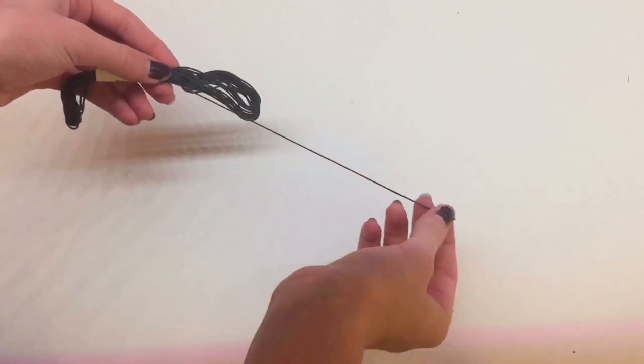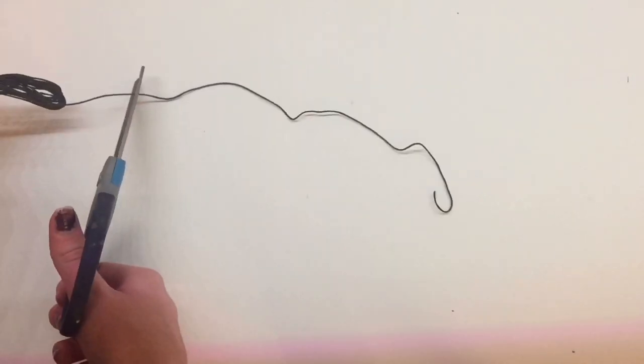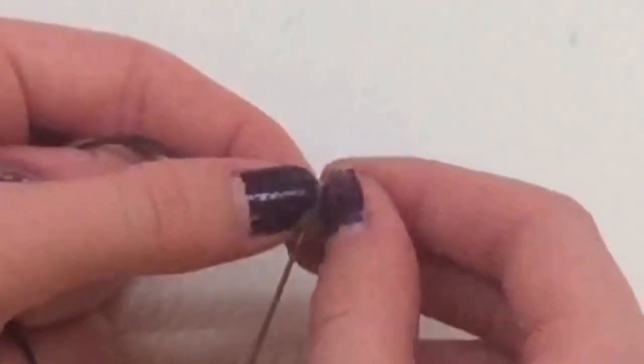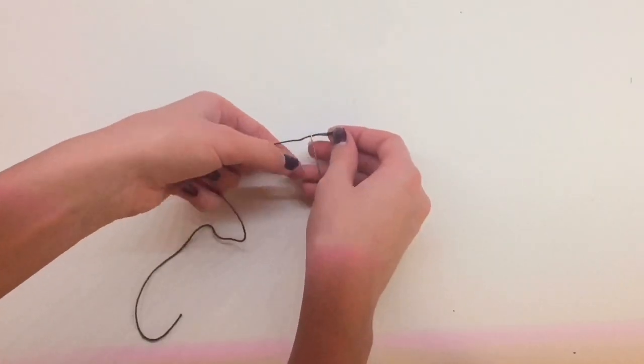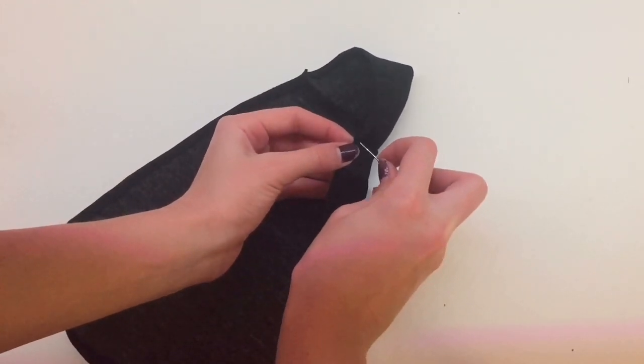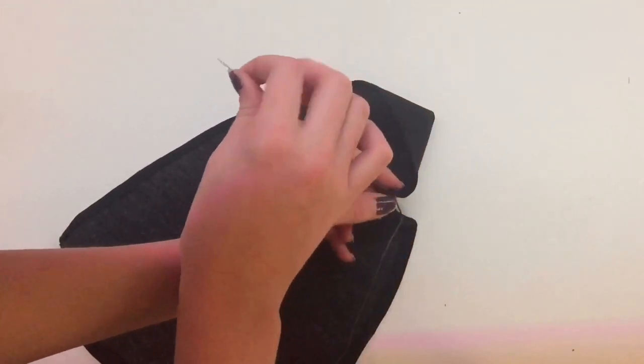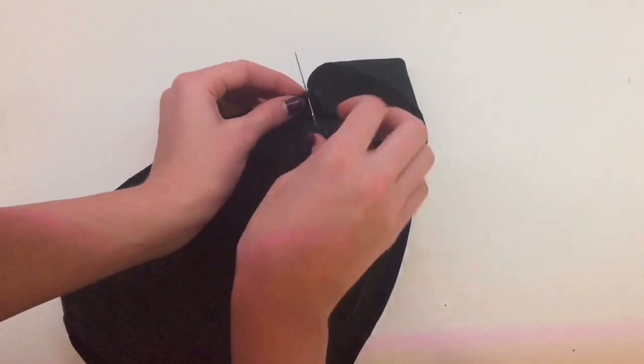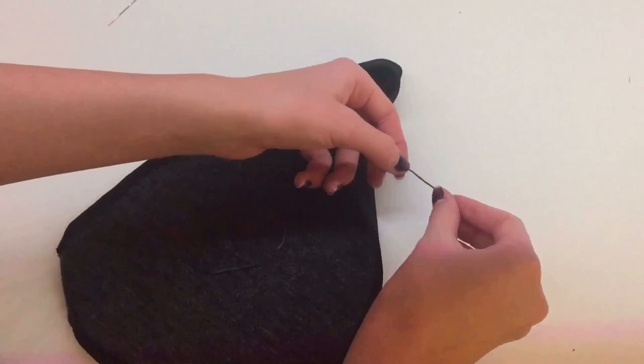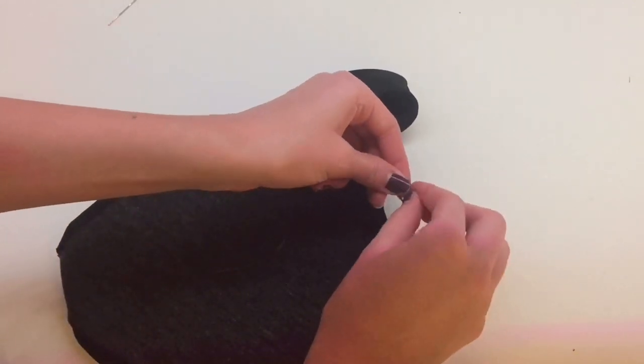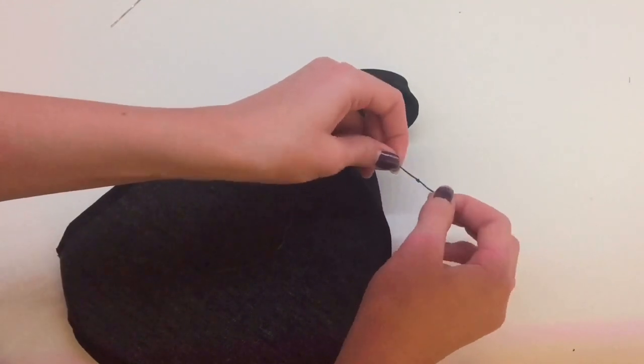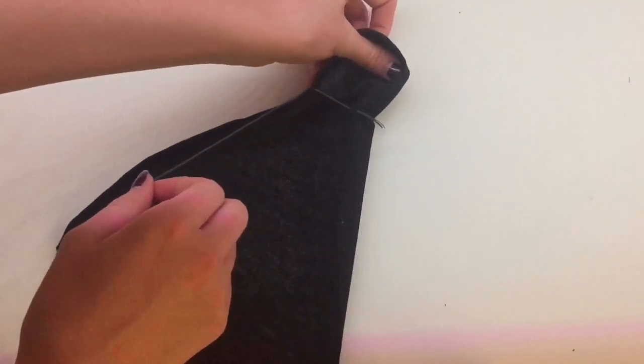Next I take some black embroidery floss and cut a long piece and thread it through a needle. Then I take the needle and poke it through right where we just stitched the hood and the top of the cape together, and repeat on the other side. Then knot the ends so that the thread can't just slip right through.